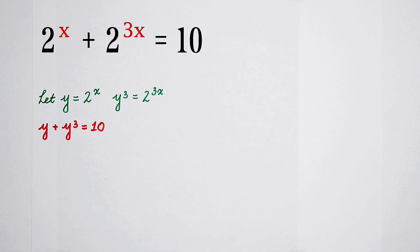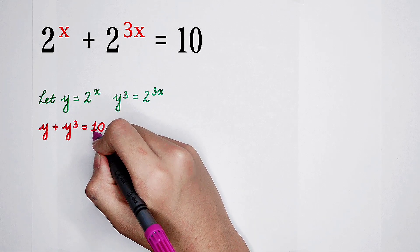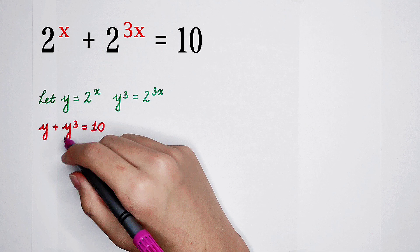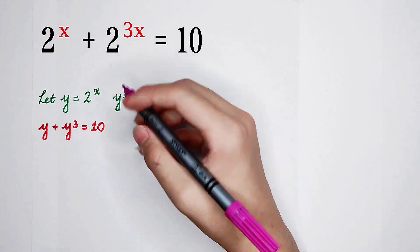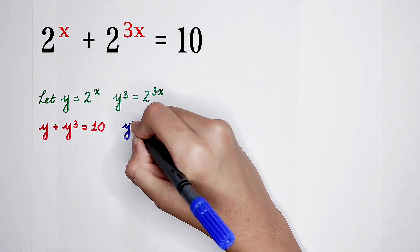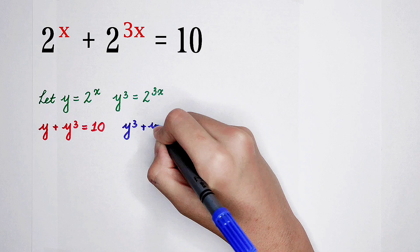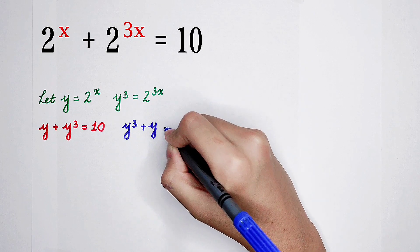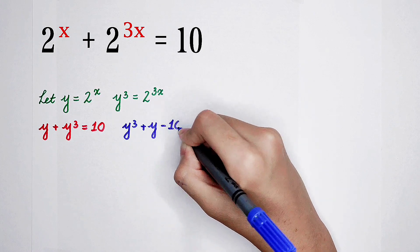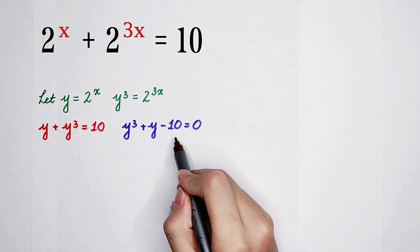I move the 10 from the right-hand side to the left-hand side, and I change the order of y and y to the power 3. Let it be a normal equation: y to the power 3, plus y, minus 10 equals 0. We have to solve this equation.